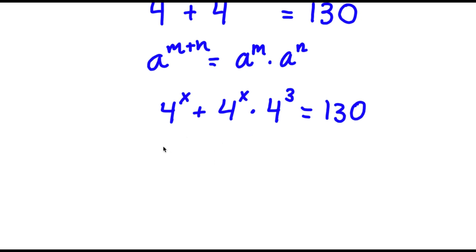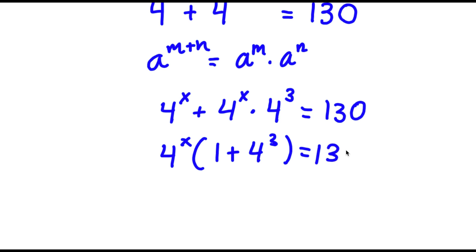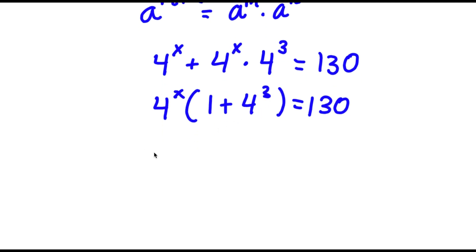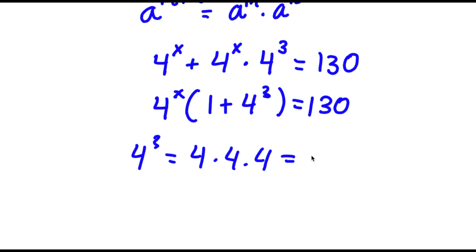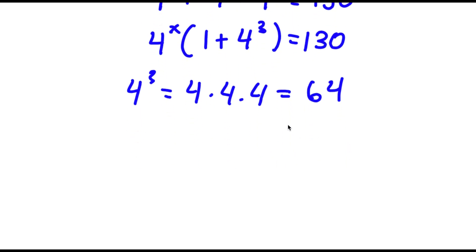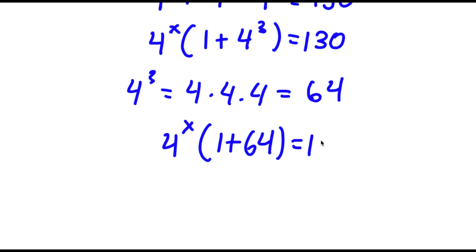Now I'm going to factor out 4 to the power of x, so I get 4 to the power of x times (1 plus 4 to the power of 3) is equal to 130. Now 4 to the power of 3 is equal to 4 times 4 times 4 — 4 times 4 is 16, and 16 times 4 is 64. So now I have 4 to the power of x times (1 plus 64) is equal to 130.